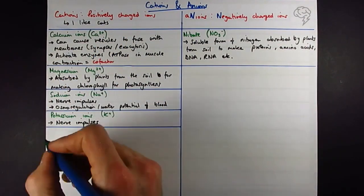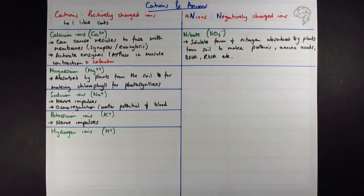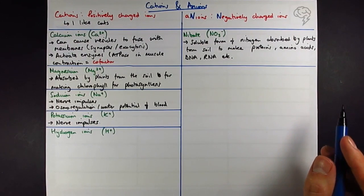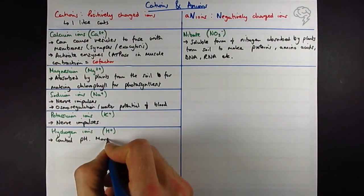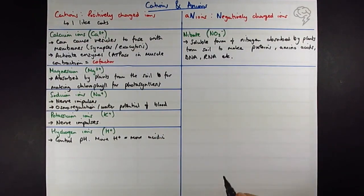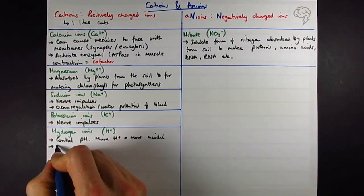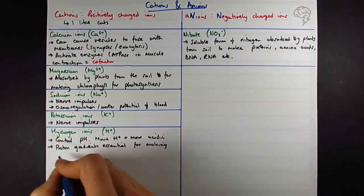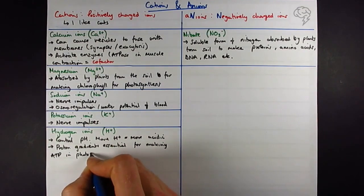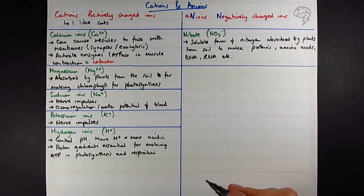So next cation is hydrogen ions. H+, or a proton, another term for that. So these guys are kind of everywhere. They control the pH. So the more loose or free hydrogen ions you have floating around the place, the more acidic something is. Essential for creating these proton or hydrogen ion gradients. They're in photosynthesis and oxidative phosphorylation and they are essential for making ATP. So if you're revising and you know about respiration, then you'll know oxidative phosphorylation is the stage where you build up the proton gradient in respiration.